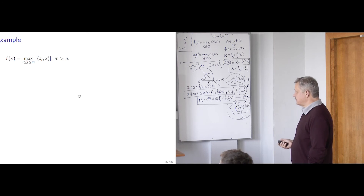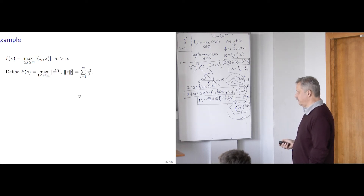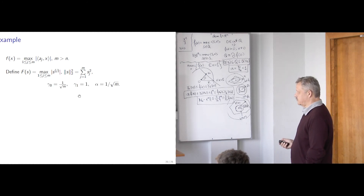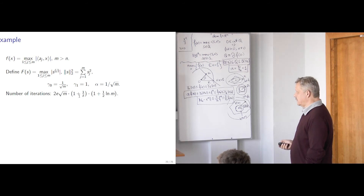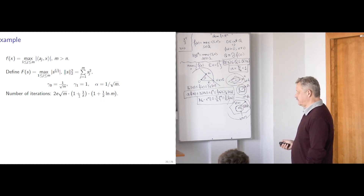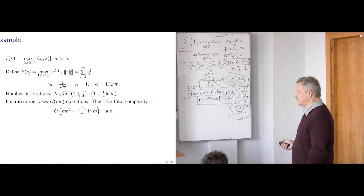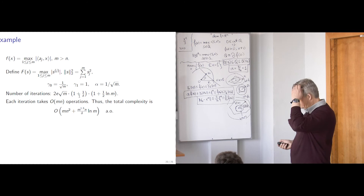Let us look at examples. Our problem is minimization of the maximum of absolute values |a_i^T x|. We look at the subdifferential of this function and describe it using the Euclidean norm. The sphericity coefficients are proportional to 1 over square root of m. The number of iterations in this situation is square root of m multiplied by 1 over delta, with a logarithmic factor. All constants are exact. Each iteration is relatively simple, needing of order m times n operations, giving the final complexity bound for solving this problem.